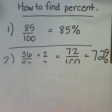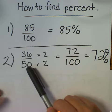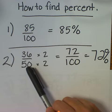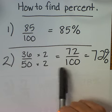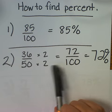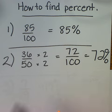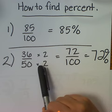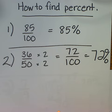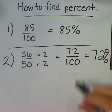The second way, let's say your test was only 50 problems. 50 is a number you can easily convert to 100 by multiplying it by 2. So we want our denominator to be 100. If I multiply the bottom by 2, I need to multiply the top by 2, and 36 times 2 is 72, and 72 out of 100 is 72%.